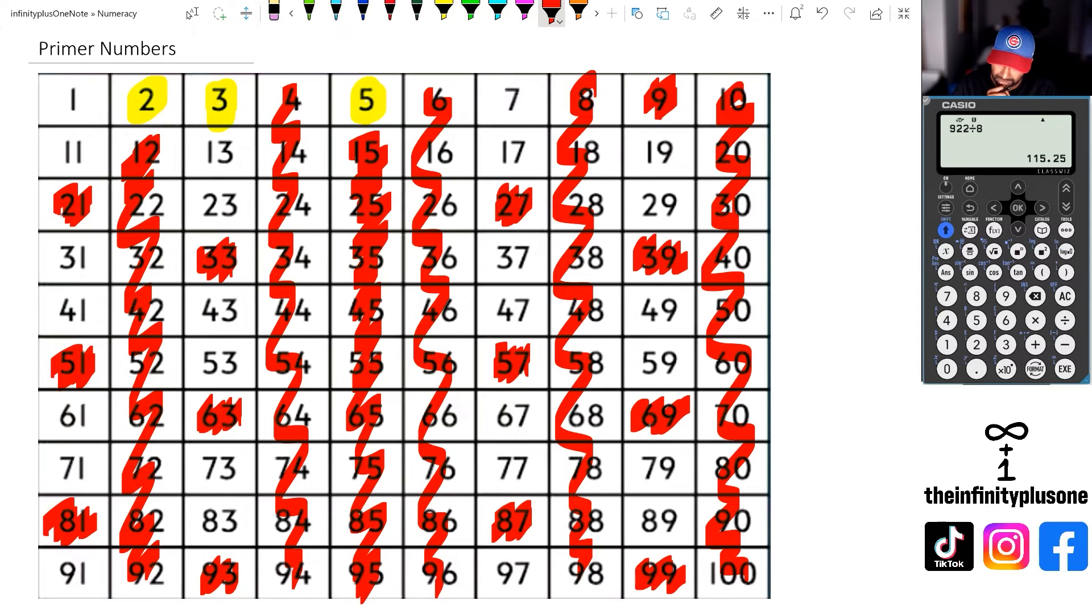Now, seven is something that I need to keep in mind, but let's just have a look. Seven, 14, 21, 28 is gone. 35 is gone. 42, 49. Okay, there we go. 49 is not a prime number. Then we've got 56, 63, 70, 77 is out. 84, 91, 98 was already out. Right, let me just tidy this up a little bit.